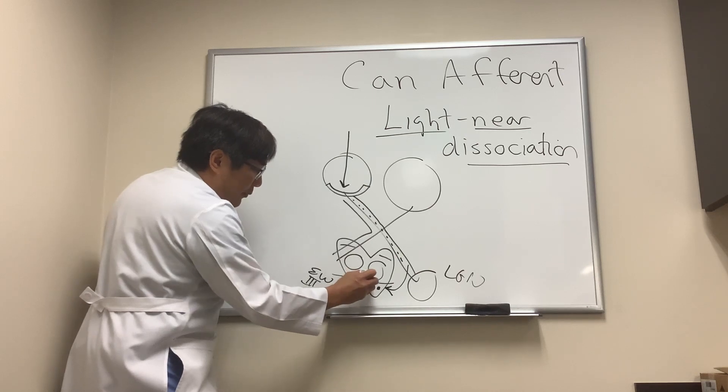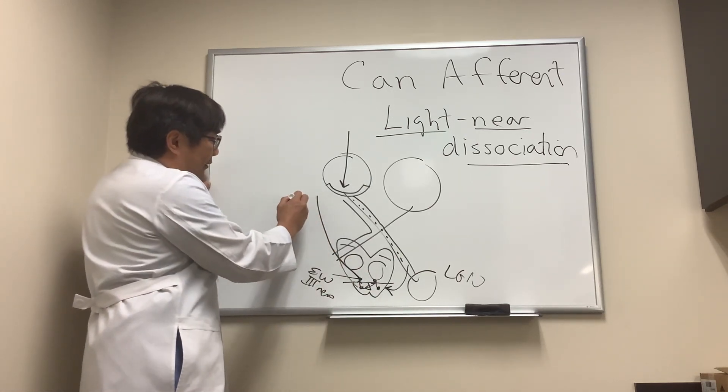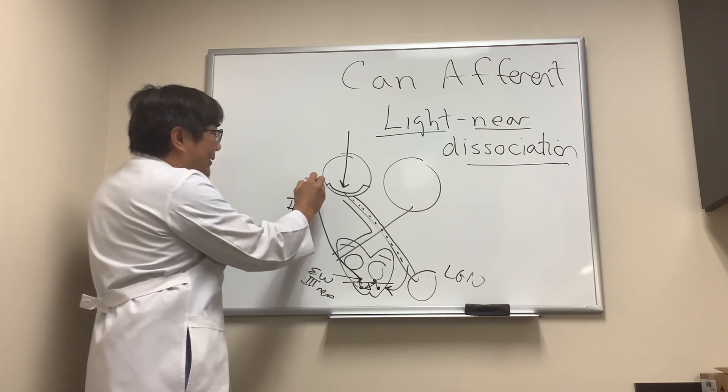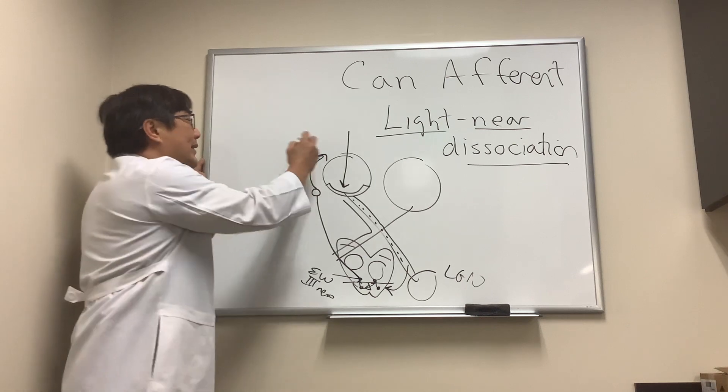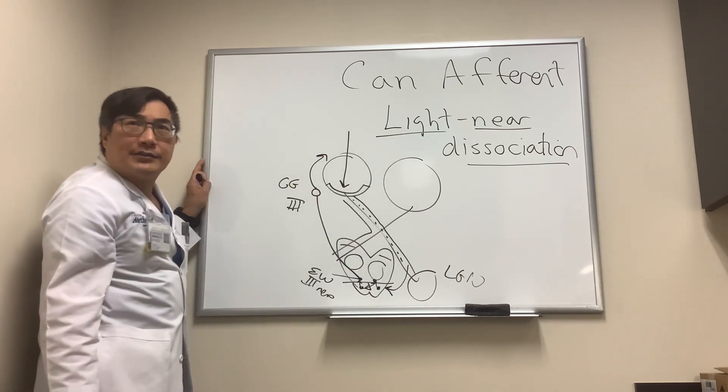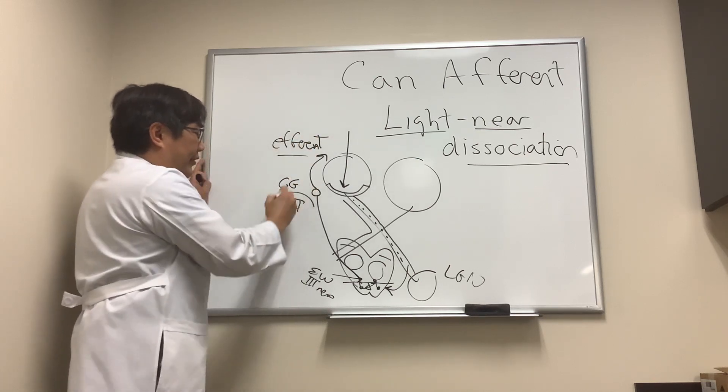But it talks to both pupils. And then the efferent pathway is carried on the third nerve to its ganglion, a parasympathetic ganglion called the ciliary ganglion, and then the postganglionic nerve to the iris. So this is the efferent pathway. It's carried on the third nerve.